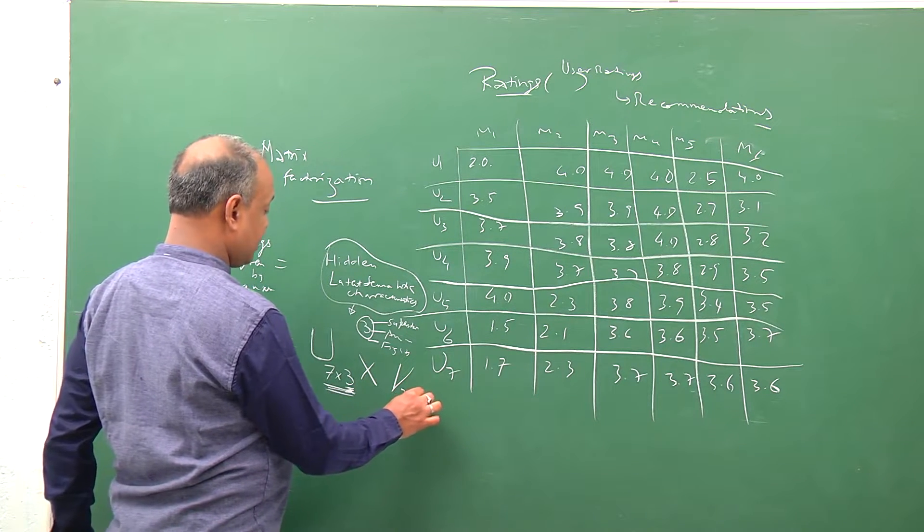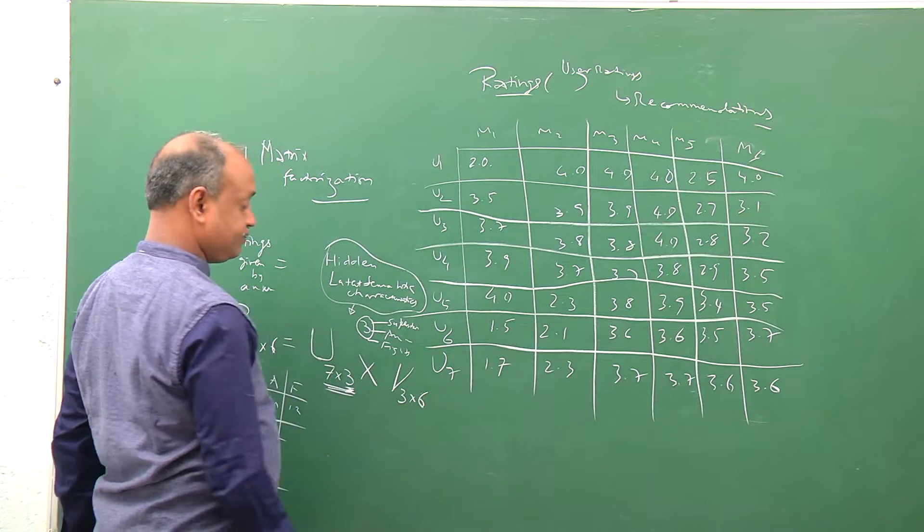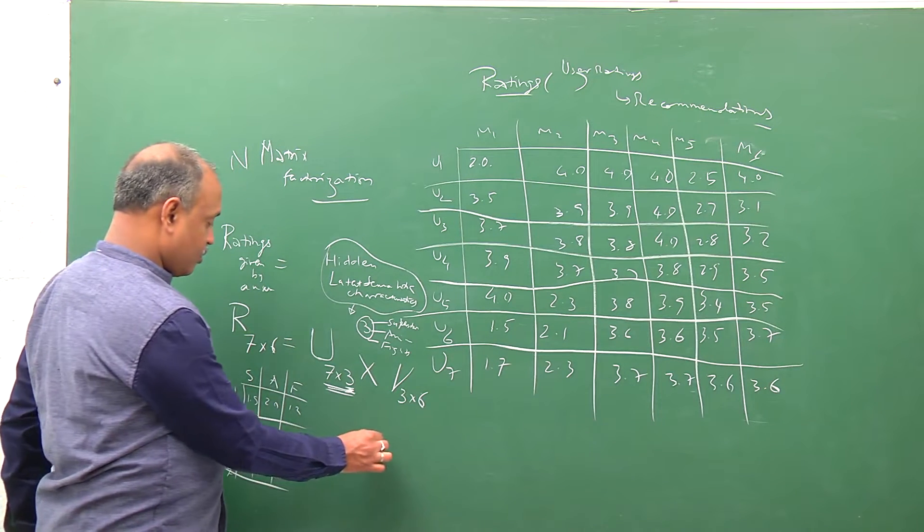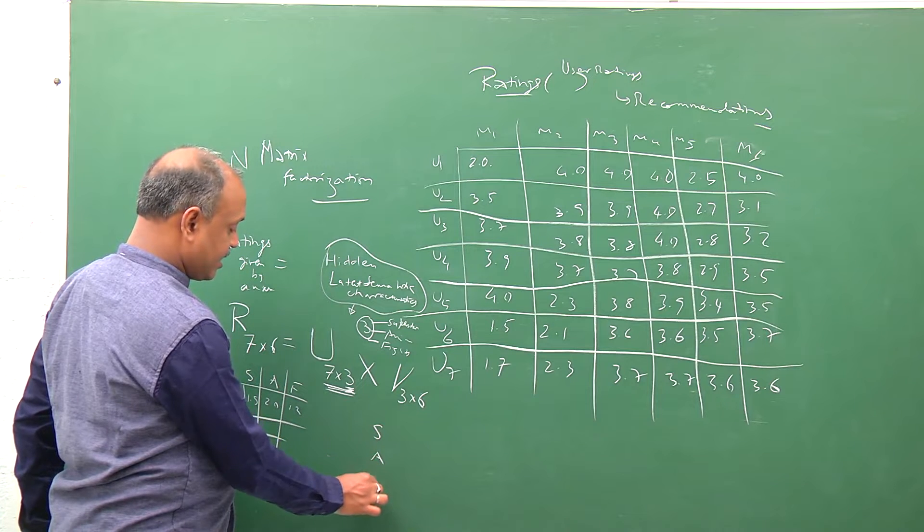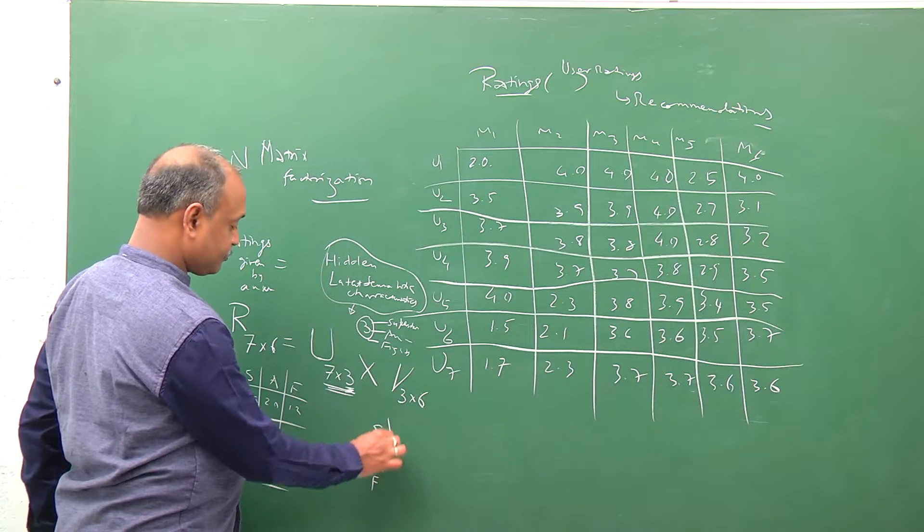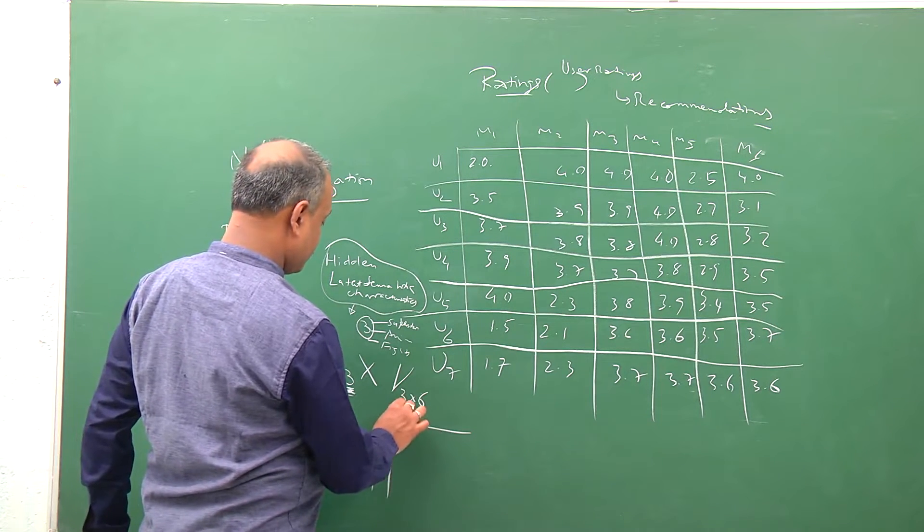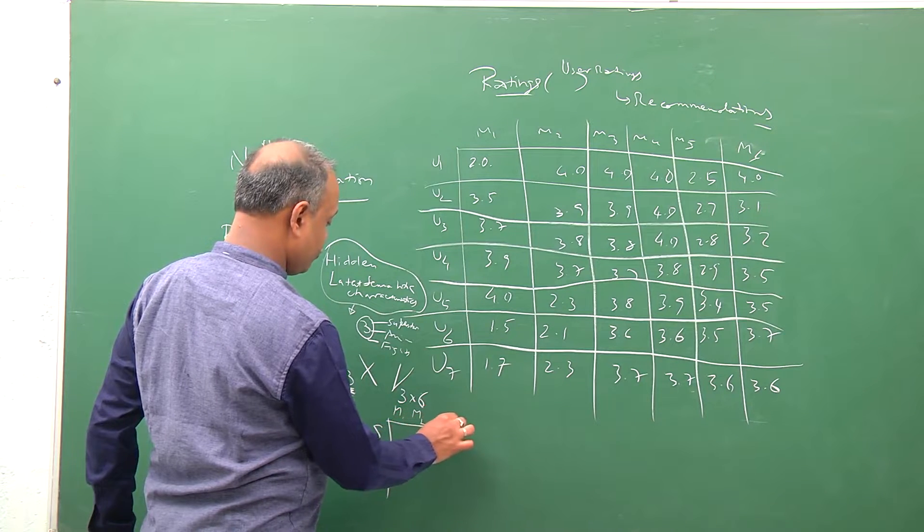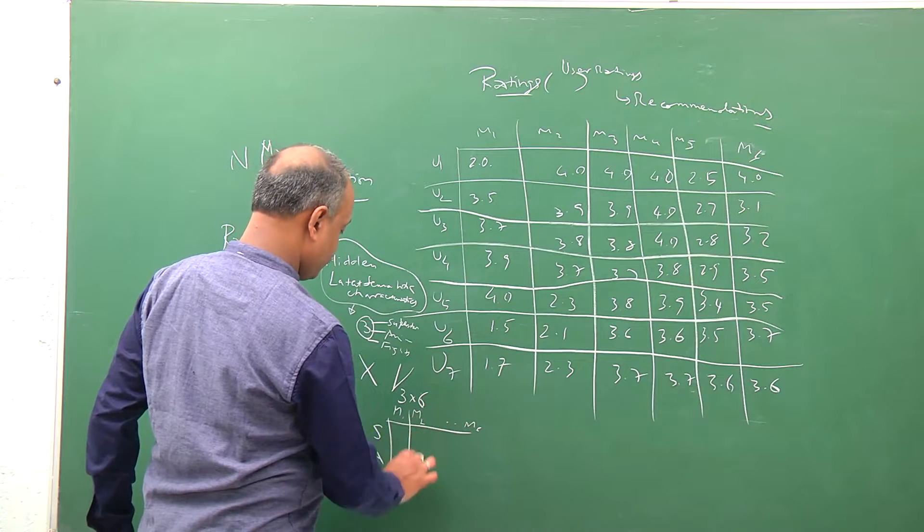The V matrix represents how much of each characteristic is present in each of the movies. If you see here, we are talking about three characteristics: S, A, and F. Then we talk about movie 1, movie 2, through movie 6.